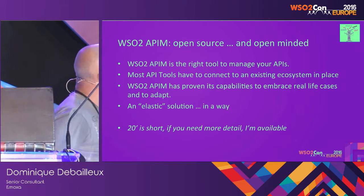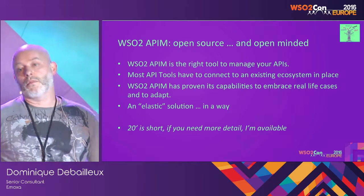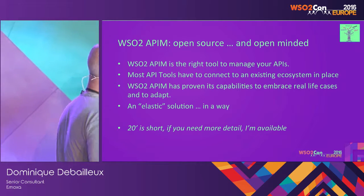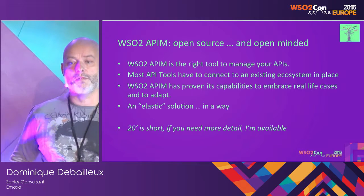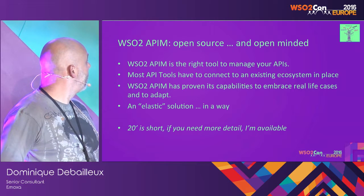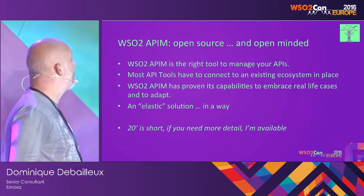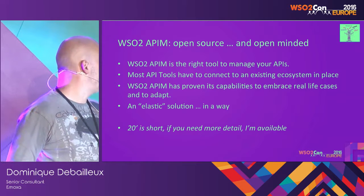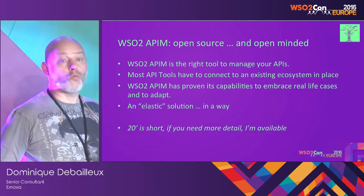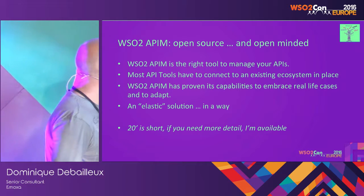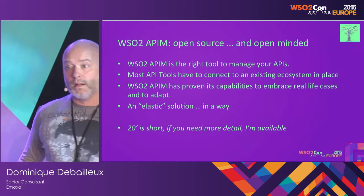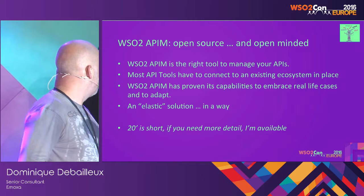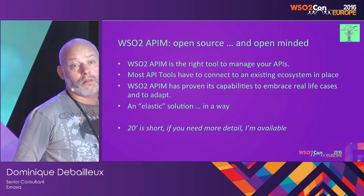Time for a conclusion. API Manager is definitely a very good tool to manage your APIs, but in most cases you already have an existing ecosystem in place for statistics gathering. API Manager has proven its capabilities to adapt — you don't need to use the whole DAS stack if you don't want to or cannot. Maybe you can start with something light like ELK, and then in the near future use DAS. It's not a problem. So we can say that WSO2 API Manager is an elastic solution.